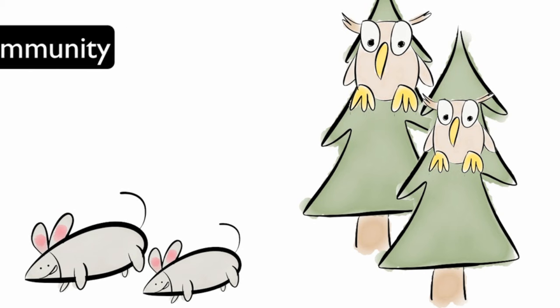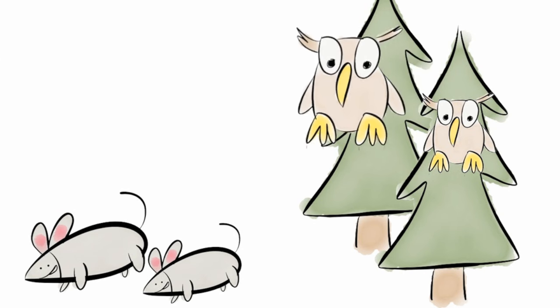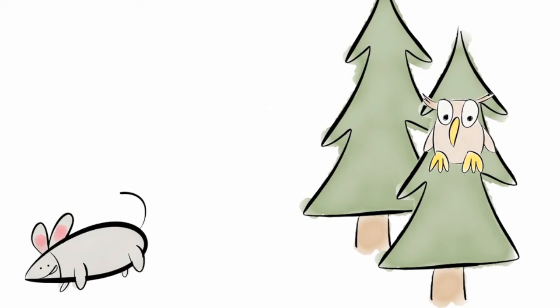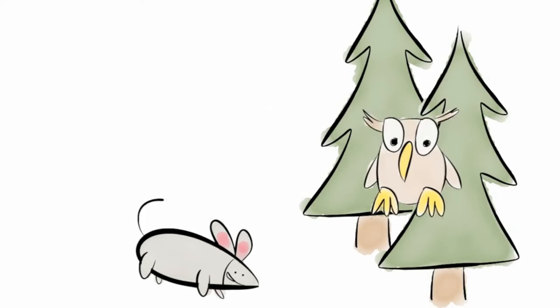Within the community, populations interact. In the forest, a population of owls interact with the population of mice. Owls hunt and kill mice as they obtain the food they need to survive.